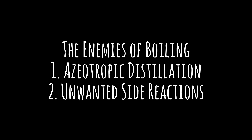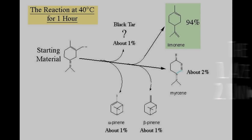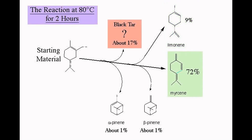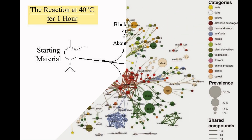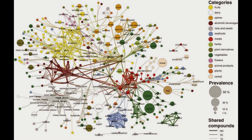Now we come to the second enemy of simmering and boiling: unwanted side reactions. In organic chemistry, this means a reaction that leads to some percentage of products you didn't want. You try to minimize this by selecting an optimum temperature. But because of the Boltzmann distribution, it's impossible to have a completely uniform temperature in any solution, so there's always some amount of undesired products.